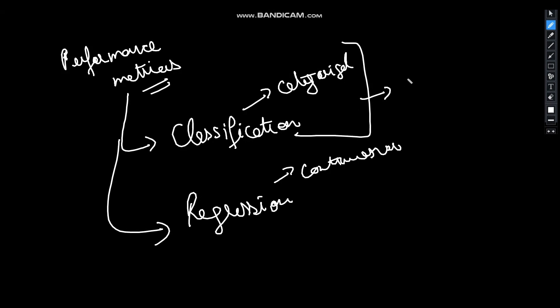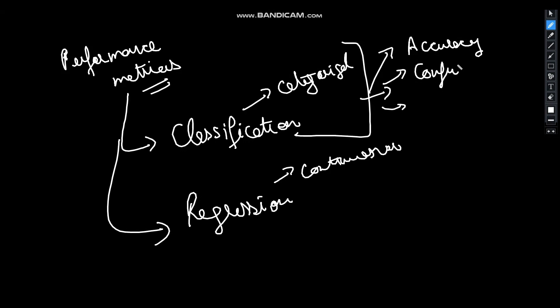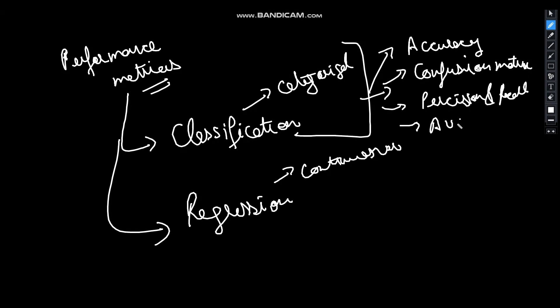When we talk of classification metrics, they are problems that categorize data into different classes. The model learns from the given dataset and then classifies new data into classes or groups based on training. It predicts class labels as output such as 0 or 1, yes or no, spam or not. These classification metrics are further categorized into: accuracy, confusion matrix, precision and recall, and AUC and ROC.